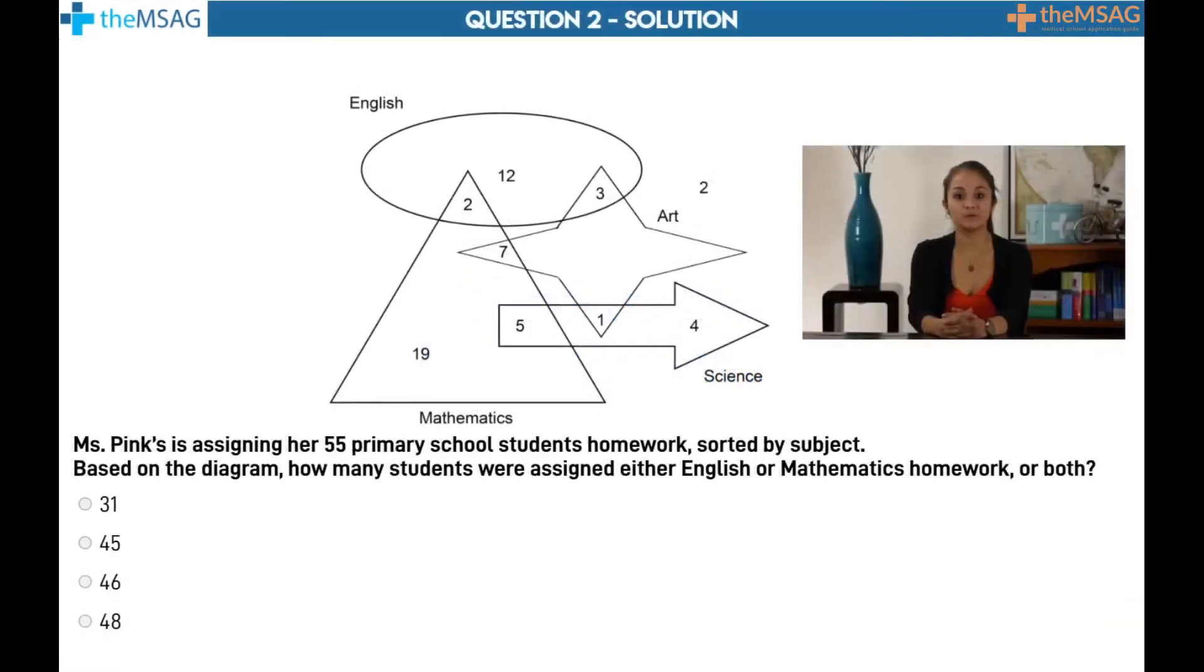The answer is 48. The quickest way to get this answer is simply add up all the numbers inside the triangle which represents mathematics and all the numbers inside the oval which represents English, being careful not to add the two twice. This means calculating 19 plus 5 plus 7 plus 12 plus 3 plus 2 which gives 48.